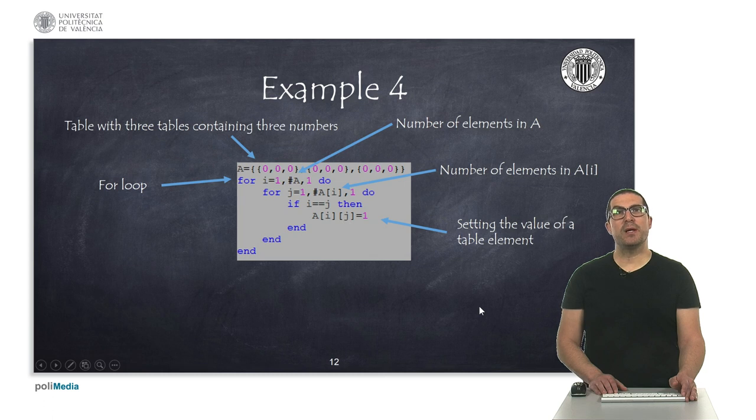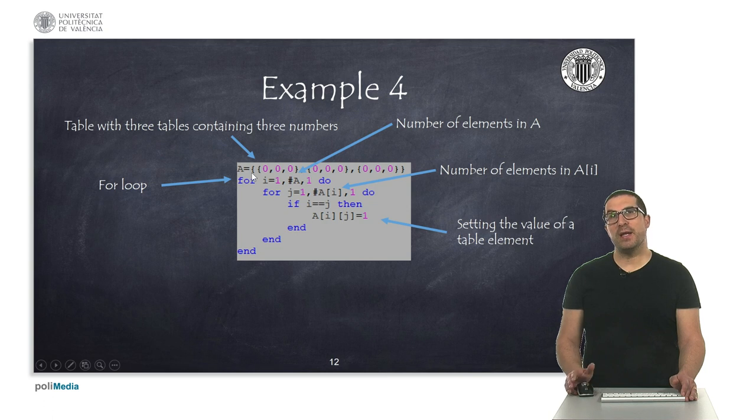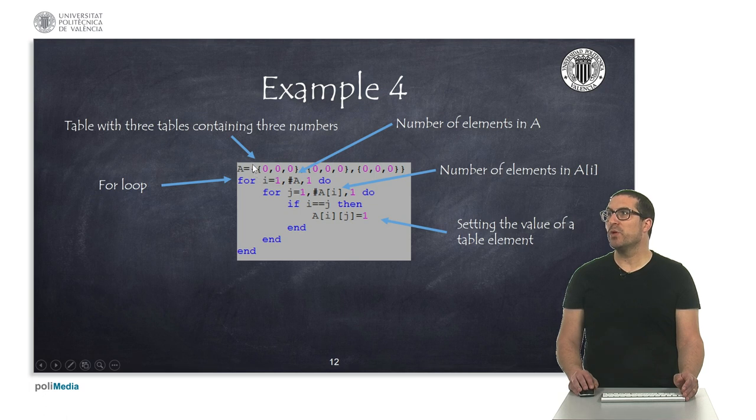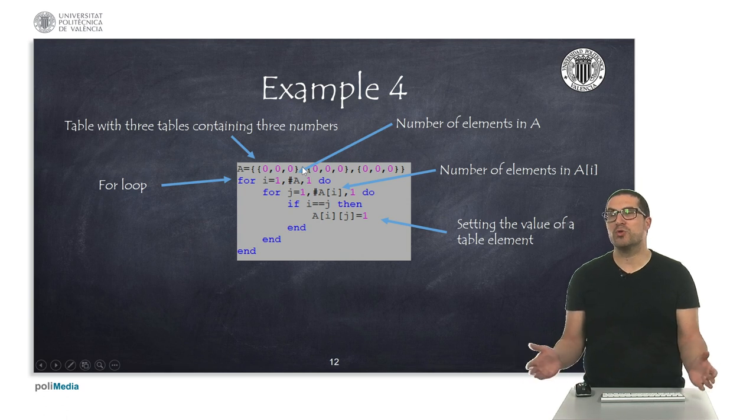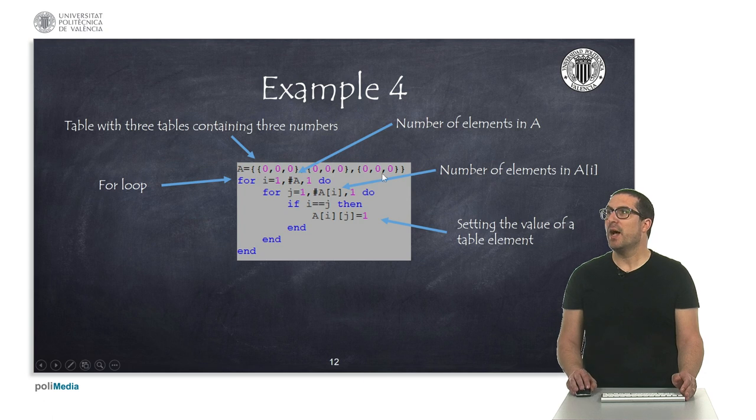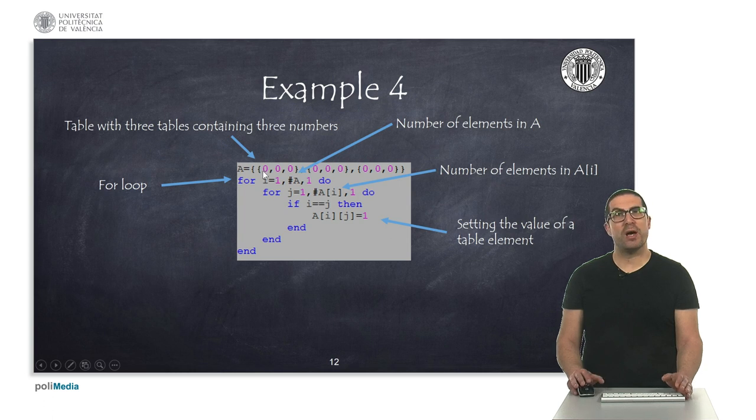In this example, I'm declaring a table. I'm doing that in a variable which is called a, and this table contains three different tables. As you can see here, to declare tables we use these brackets here, and tables could contain any kind of number, even strings, any kind of object. So they are very flexible. Although, we usually will use standard tables like in C, and we could use them to store matrices, like I'm doing here. Indeed, as I said, this table here is storing three different tables, one, two, and three. And each of these tables could have different variable length, in this case, three numbers with zeros.